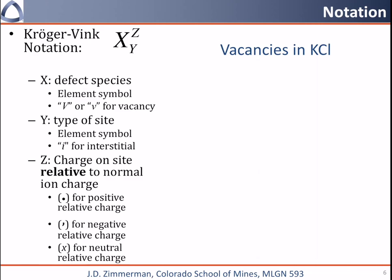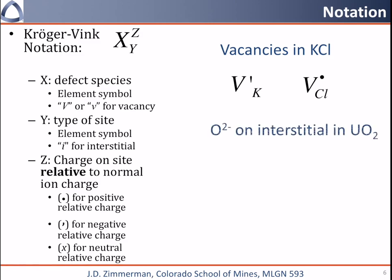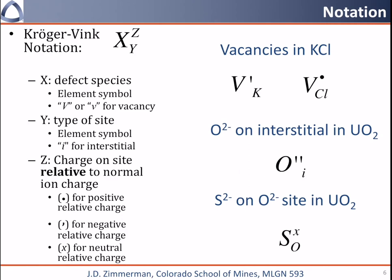Let's do a couple of examples. First, vacancies in potassium chloride. A vacancy on a potassium site: potassium is usually +1, the vacancy has zero charge, so it is one less than normal and gets the prime symbol. We could also describe the vacancy on a chlorine site: the anion is usually −1, but the vacancy is uncharged, so it's one more positive than normal and gets a black dot. Next, an oxygen anion on an interstitial site in uranium dioxide: oxygen is 2− on a normally uncharged site, so we get two primes. Finally, a sulfur anion on an oxygen anion site in uranium dioxide: these have the same charge, so it's just sulfur on oxygen with an x for neutral.